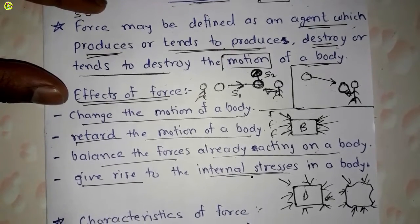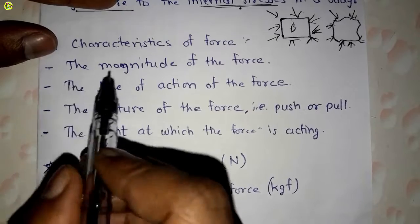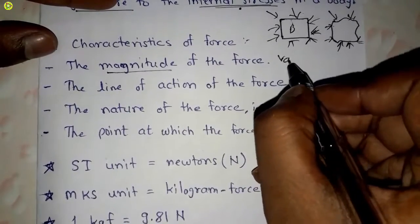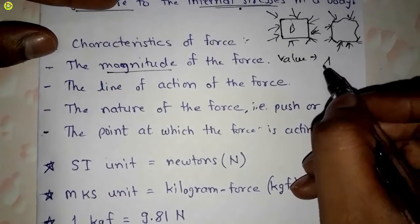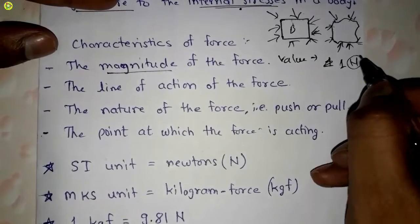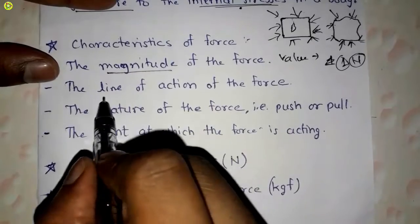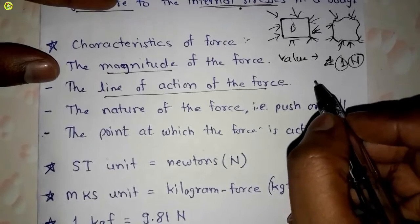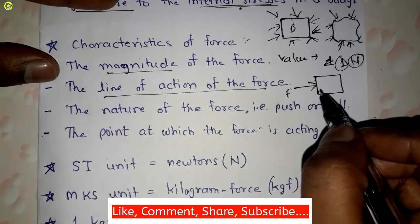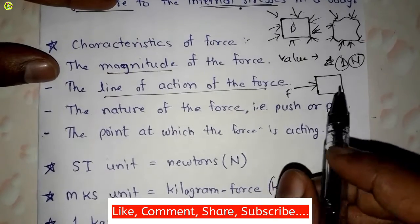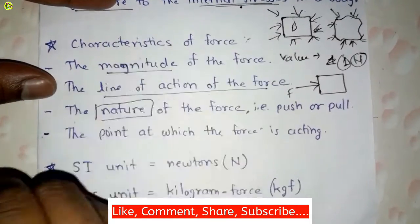Now let's see the characteristics of force. The first characteristic is the magnitude of the force — that is the value, for example one newton. Newton is the unit and one is the magnitude. The second characteristic is the line of action of the force — suppose this is the force, and this is its line of action, which you can also call the direction of the force.